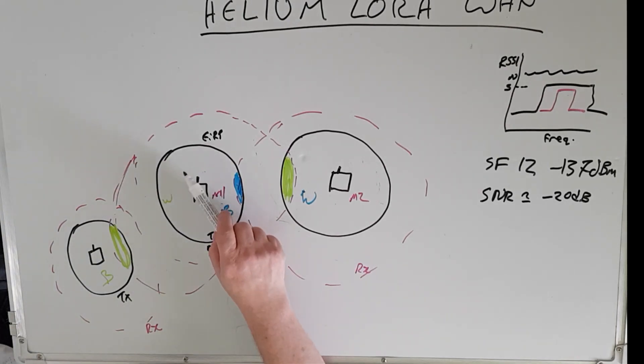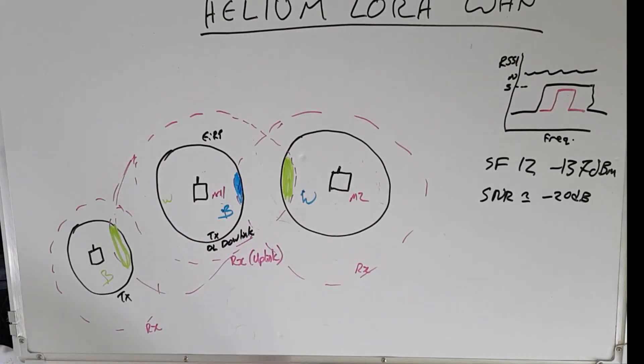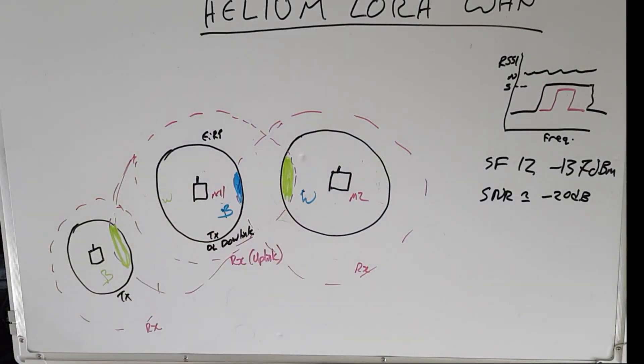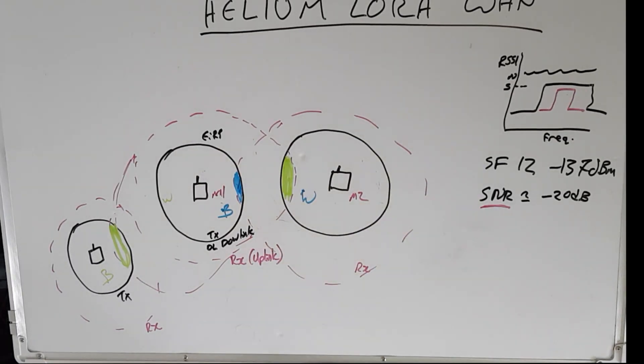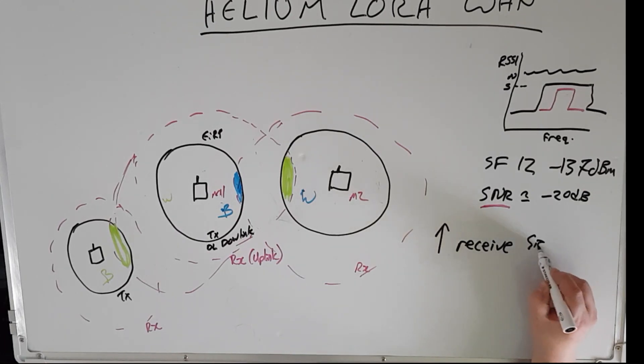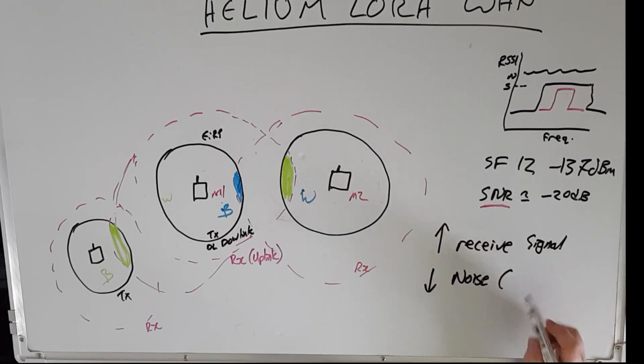So then we have this guy, miner number one, is now a witness to both miner number two's beacon and miner number three's beacon. So if this is all about the receive coverage areas, then we need to increase the SNR. So how do we go about doing that? Well that's simply a case of either increasing the receive signal or reducing the noise, or both.